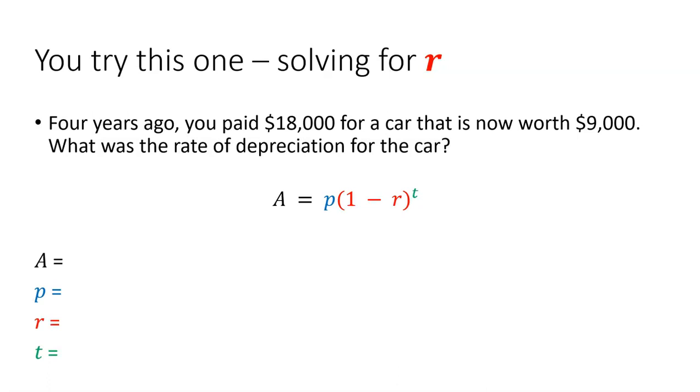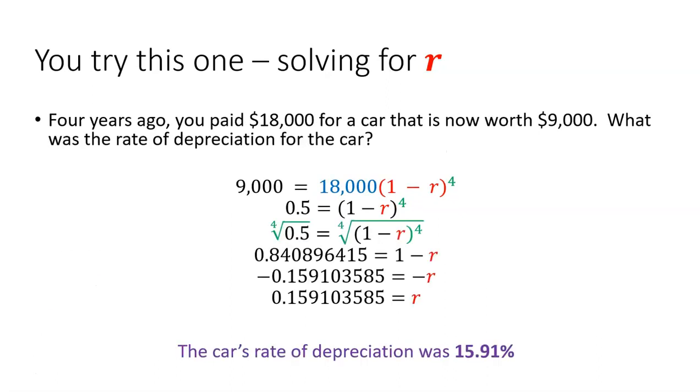All right. It is exponential decay. And you notice on the left-hand side, we've got A, p, r, and t all set up. We'll put in the values that we know. We don't know r, but we know all the rest of them. Stick them into the formula. And then here's the work. If you want to pause the video to check it out, hopefully you got that the rate of depreciation is about 15.91%.